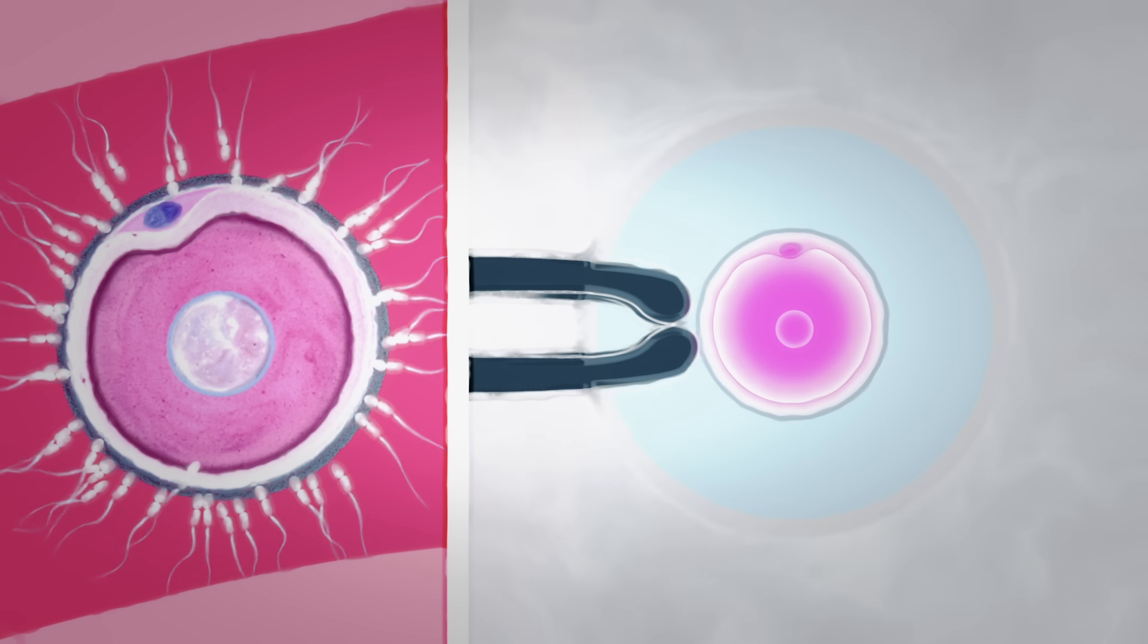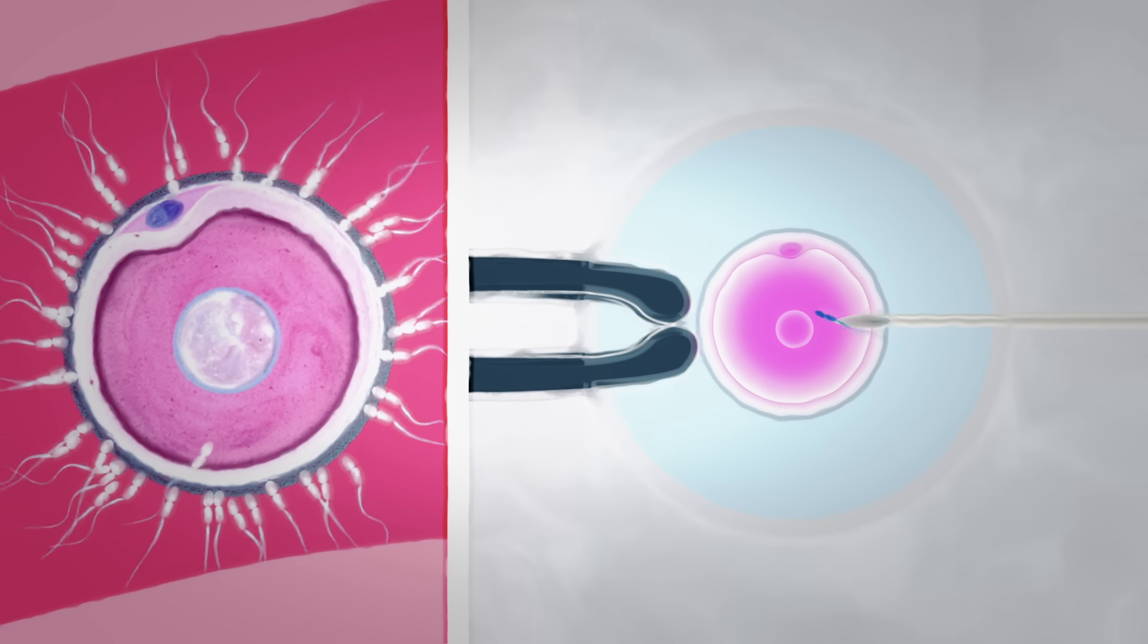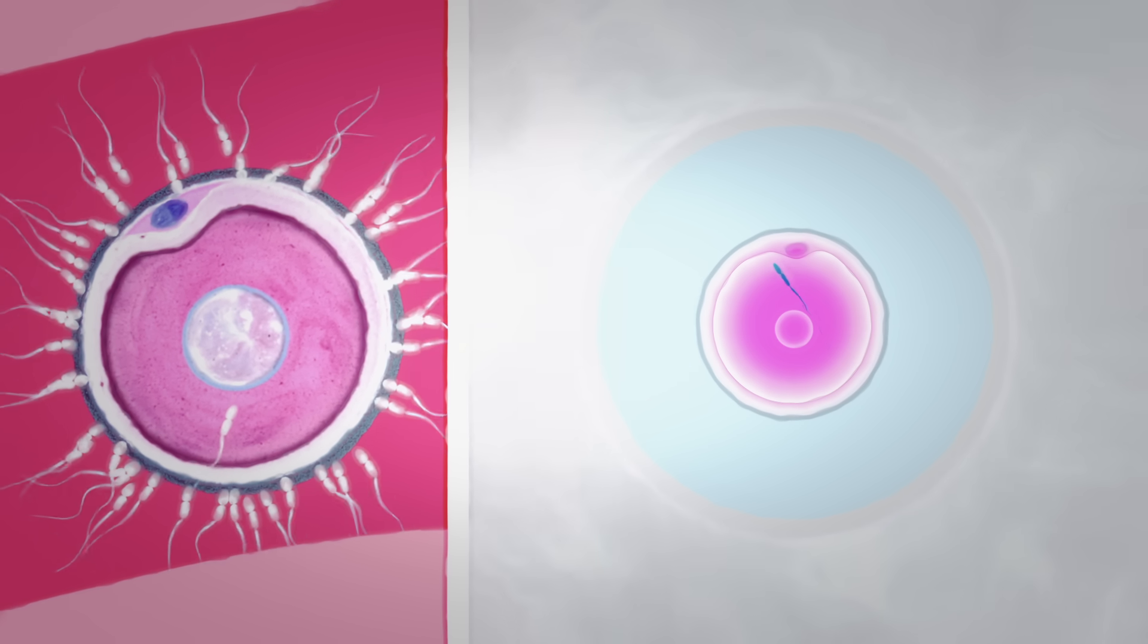The second technique maximizes certainty of fertilization by using a needle to place a single sperm inside the egg. This is particularly useful when there is a problem with the quality of the sperm.